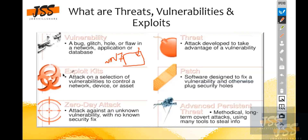In exploit kits, attackers find these vulnerabilities and use them to access your Windows 7 system, putting malware inside it. These are vulnerabilities. Exploits are basically how attackers use those vulnerabilities to access these systems. So that is the difference between vulnerabilities and exploit kits.